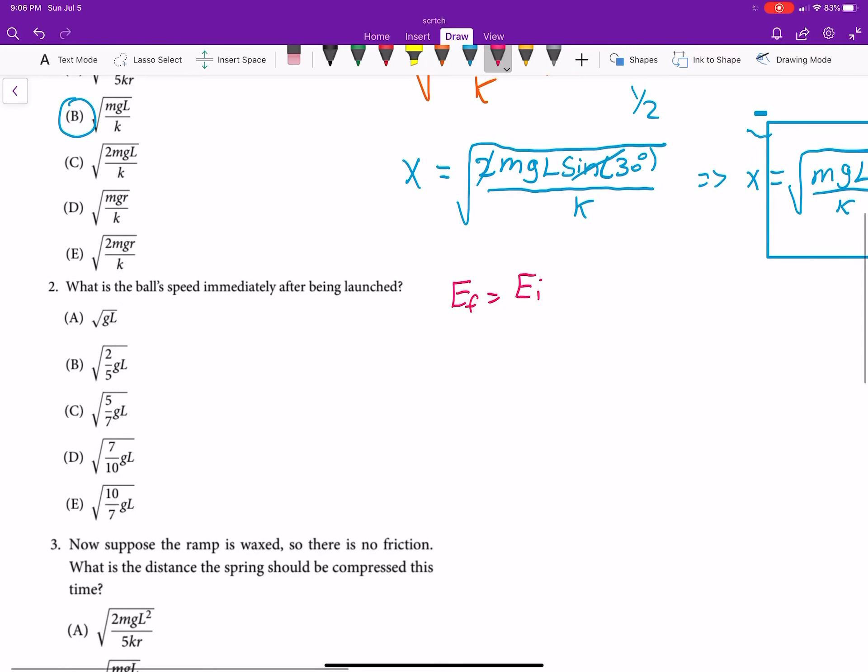Your final energy because it's still going to be launched at the same part, it'll be mgl over 2. That's your potential energy. Your height doesn't change. It's still L sine theta and theta is still 30 degrees. So, it's just mgl over 2. But, now we want to consider the initial velocity. So, you're going to have kinetic energy translational and kinetic energy rotational. So, that's just going to be 1 half mass times initial velocity squared plus 1 half I omega squared.